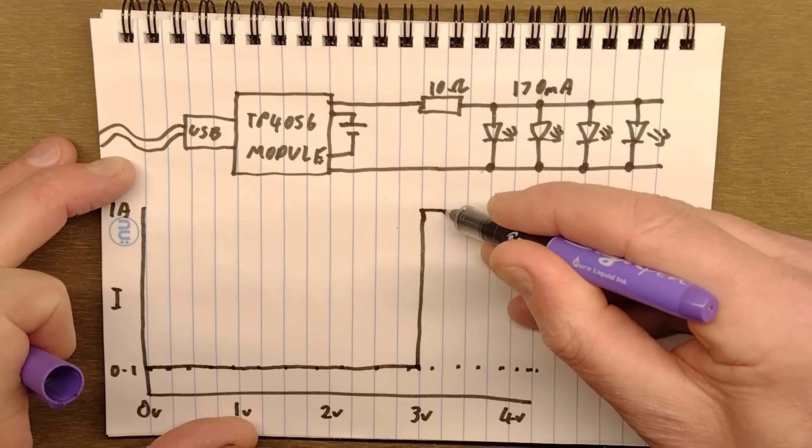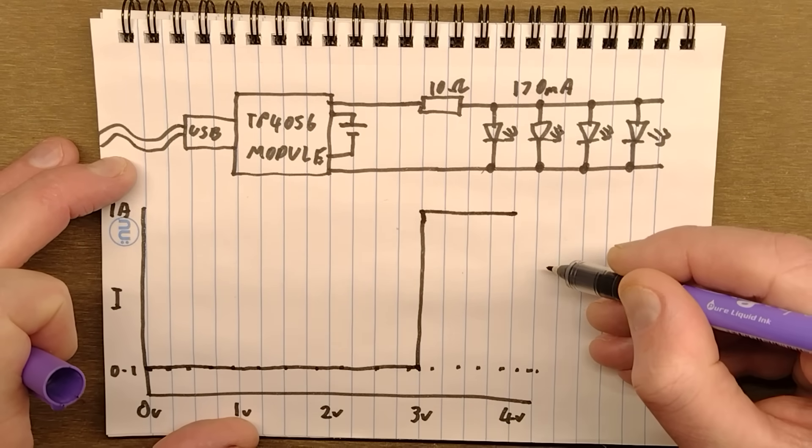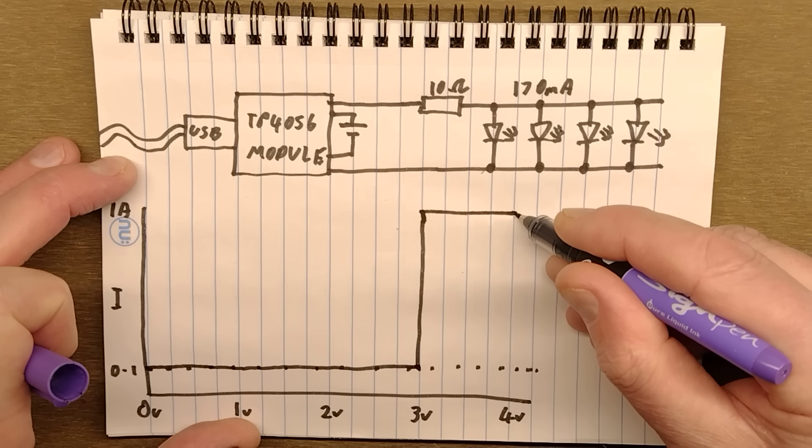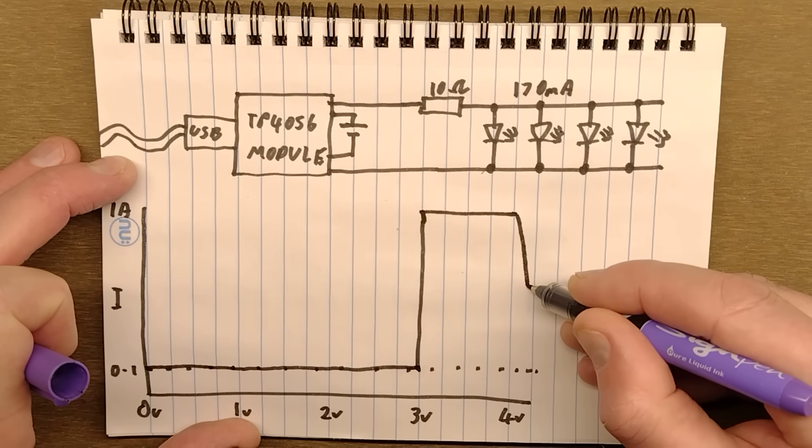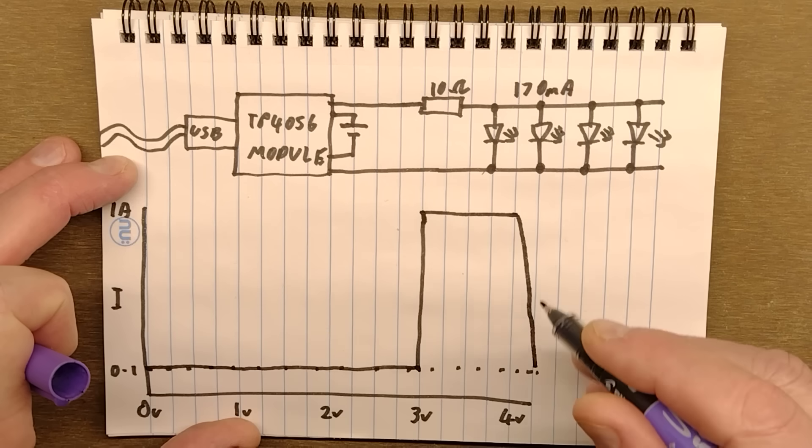But if supposing it was at zero volts, it will trickle charge the cell until it reaches about three volts. Once it reaches three volts, the current switches up to the one amp, and it will continue charging up until it reaches just above four volts at one amp. But then, instead of just suddenly shutting off again, the voltage tails off gradually at the end until it reaches the 4.2 volts, roughly.